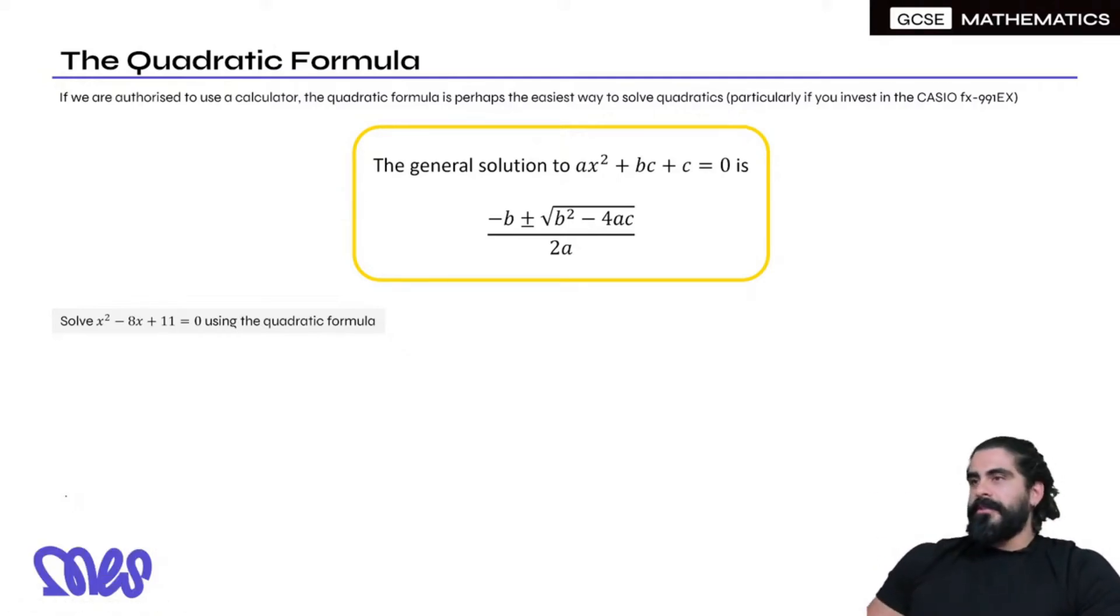Let's practice using the quadratic formula. Solve x² - 8x + 11. We write down first what a, b, and c are. The coefficient of x² is a, that's just 1 here. b is the coefficient of x, is -8, and c is just the number at the end.